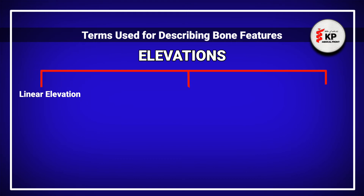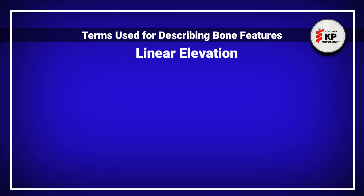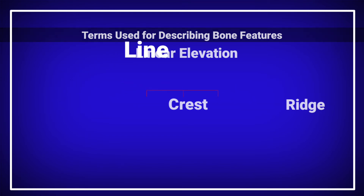The three types are: linear elevations, rounded elevations, and sharp elevations. The linear elevation is an outgrowth not restricted to a single point; rather, it is an elevation in a linear or line form. The linear elevation is known by different names in the human body — line, crest, and ridge.